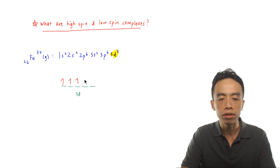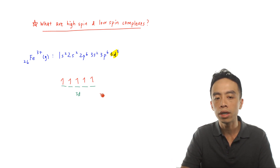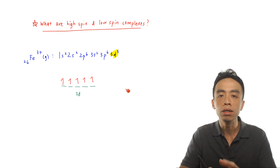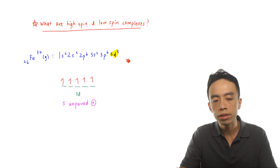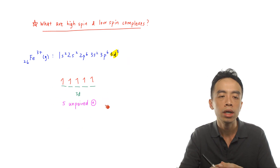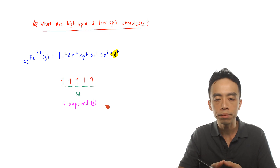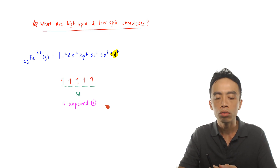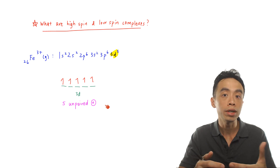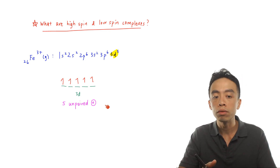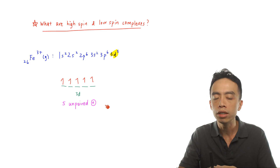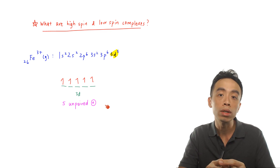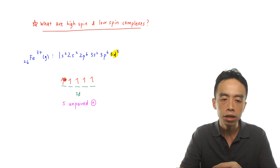The result for 3d⁵ is five unpaired electrons. The number of unpaired electrons is related to spin — more unpaired electrons means higher spin, fewer unpaired electrons means lower spin. So when comparing high spin and low spin complexes, we need to count the number of unpaired electrons in the 3d subshell.